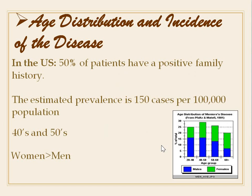Regarding age distribution and incidence in the US, 50% of patients have a positive family history. The estimated prevalence is 150 cases per 100,000 population. Those in their 40s and 50s are mostly involved and women are more commonly affected than men.